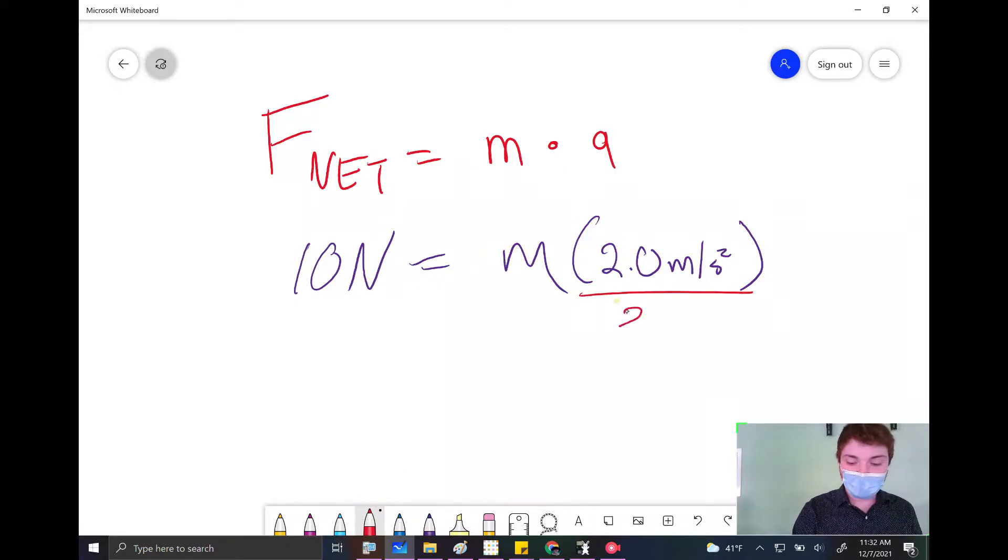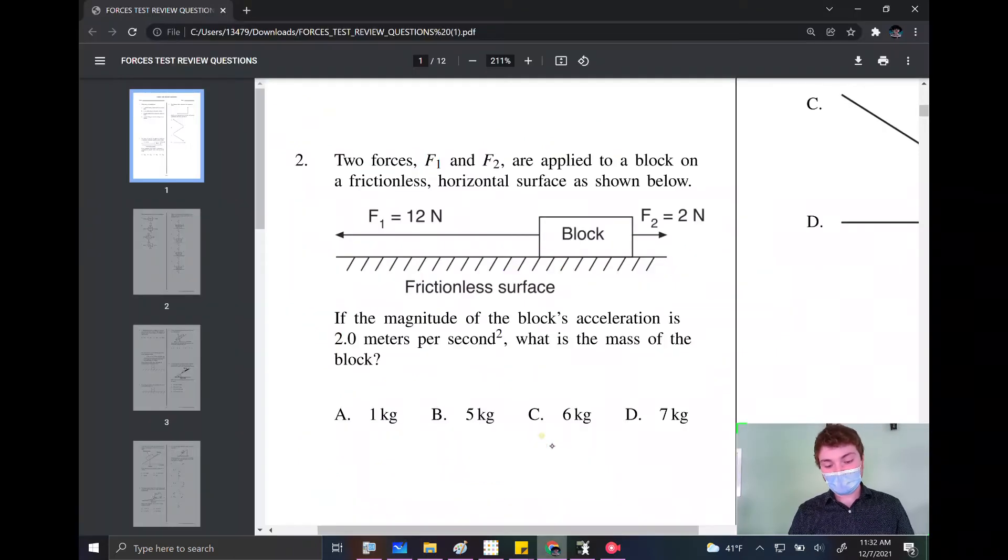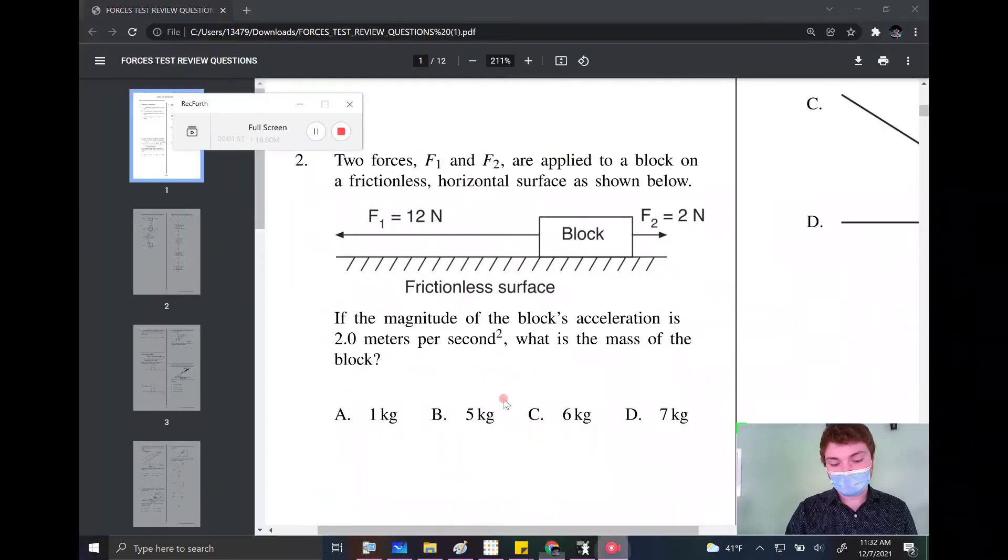Well, then all I have to do is solve for M, divide by 2. To cancel that out, divide by 2 here. And I wind up getting 5 kilograms is the value of my mass. Is that an option? Yes, it is. It's option B.